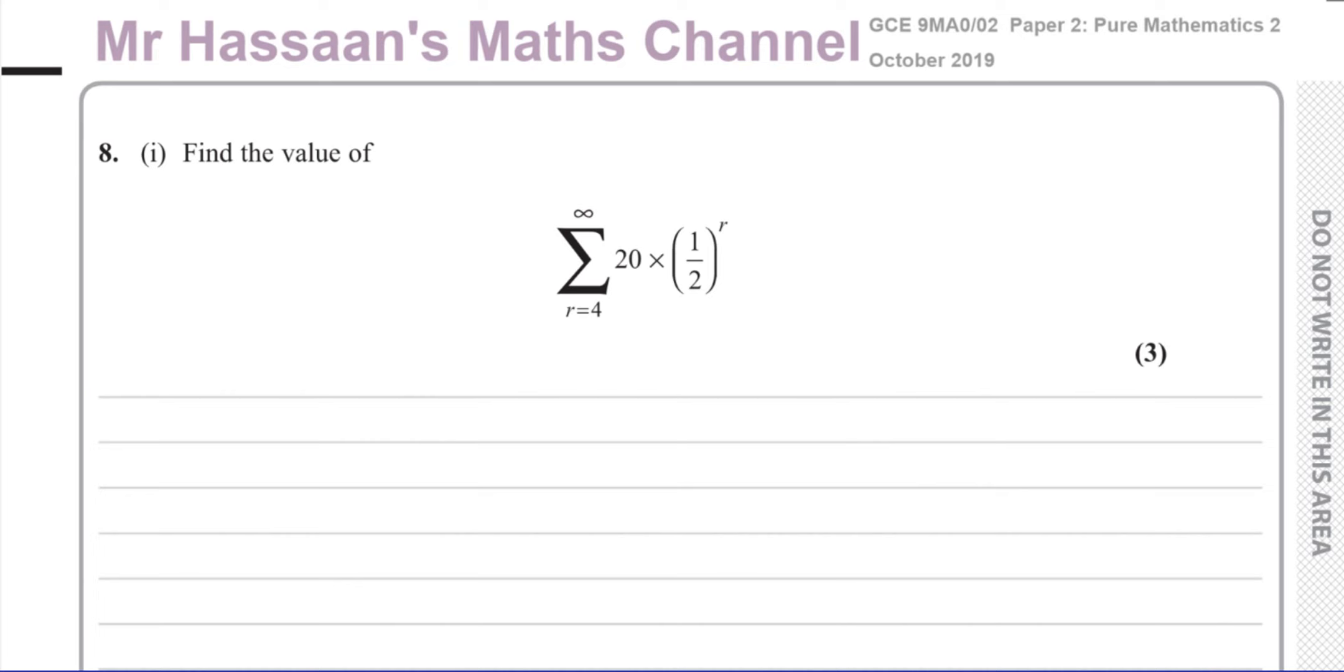Sequences, series, sigma notation. Now, a lot of students will look at something like this and they will get frightened. They'll think, what is this? But actually, it's not very difficult. It's actually quite easy. What they're asking us is to find the value of, and this symbol means the sum of, sigma, the sum of. Capital sigma is a Greek letter of the alphabet.